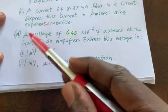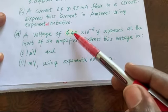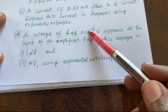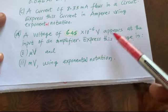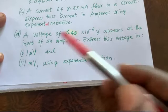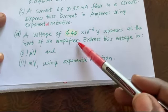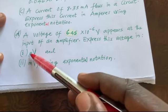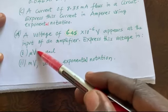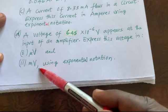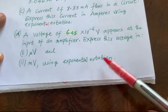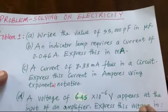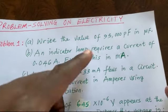Part D says a voltage of 6.45 times 10 raised to the power of minus 6 volts appears at the input of an amplifier. Express this voltage in microvolt and in millivolt using exponential notation. Let us take the problems one by one.